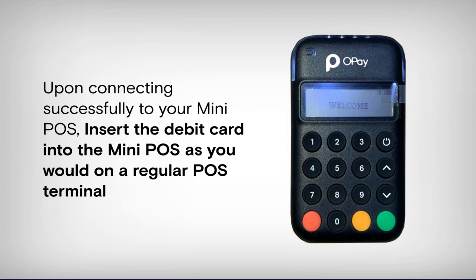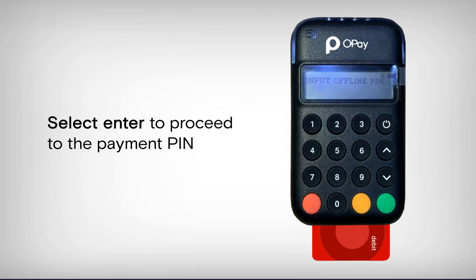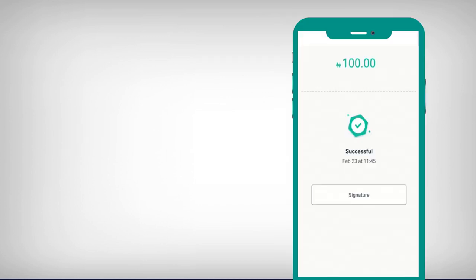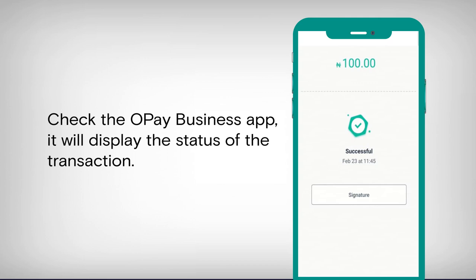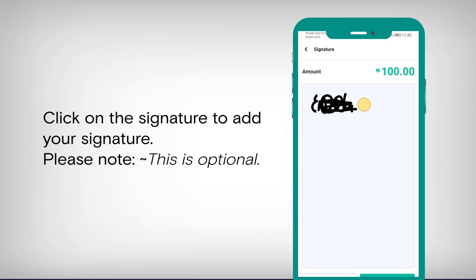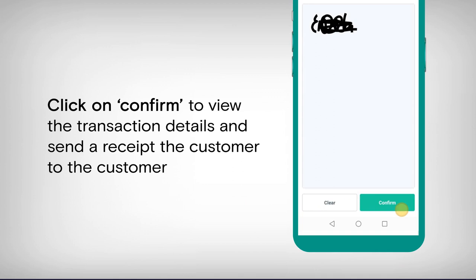Upon connecting successfully to your mini POS, insert the debit card into the mini POS as you would on a regular POS terminal. Select Enter to proceed to the payment PIN. Have the customer insert their PIN on the POS and allow the transaction to process. Check the Opay business app — it will display the status of the transaction. Click on the signature field to add a signature (this is optional). Click Confirm to view the transaction details and send the receipt to the customer.